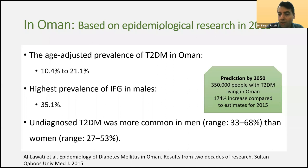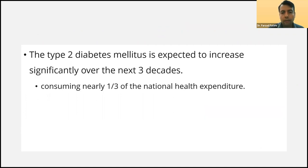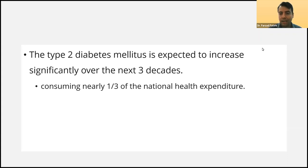Therefore, diabetes would be a major concern in future. When you have rising numbers of diabetic patients, you would have rising numbers of complications, and sometimes managing complications is more difficult and more important than diabetes itself. As type 2 diabetes is increasing, in the next three decades we will have an epidemic of diabetes, estimated to consume around one-third of national health expenditure. Therefore, it's required to be ready for an epidemic of diabetes and its complications.